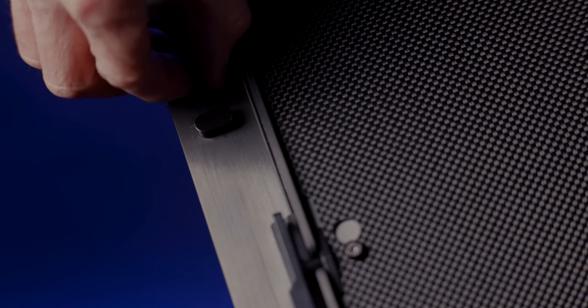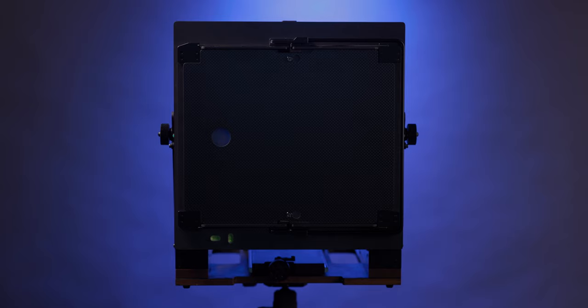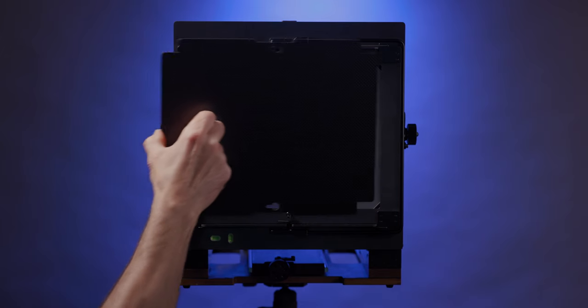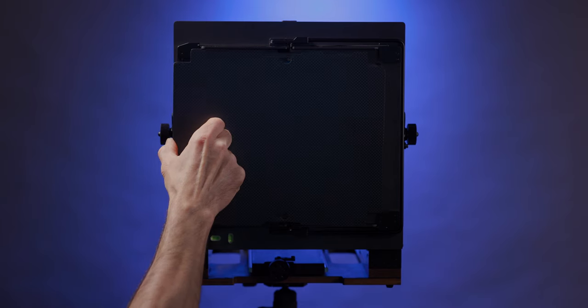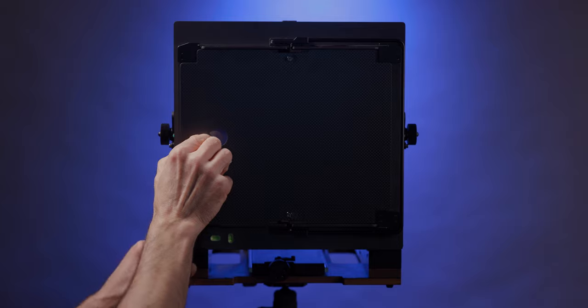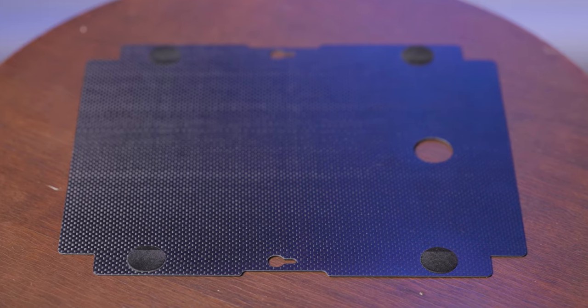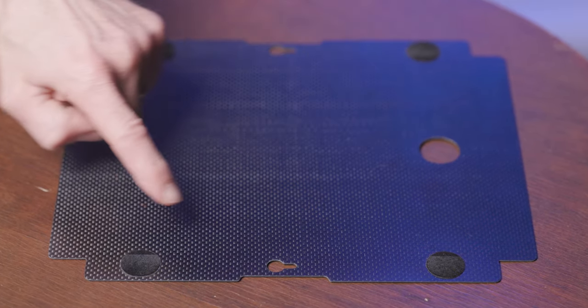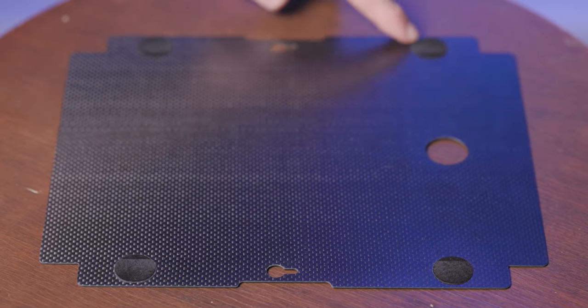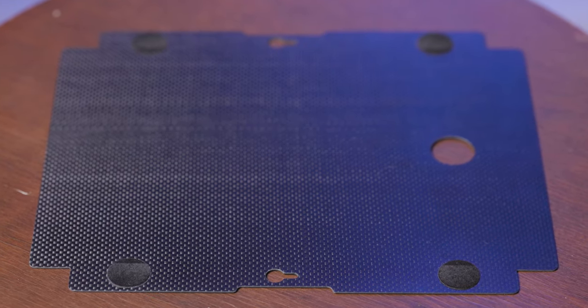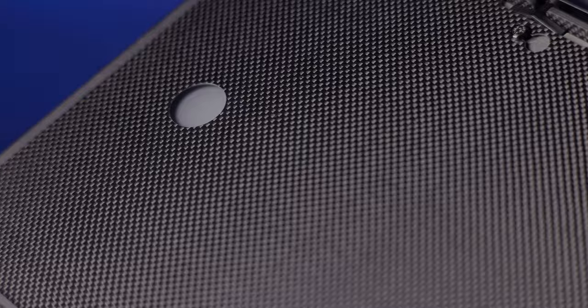There are also two bubble levels for adjusting the camera in the horizontal and vertical positions. Another nice feature is the included carbon fiber ground glass protector that uses keyhole slots to hold it in place and has four felt pads to minimize contact with the carbon fiber of the film back as well as the edge of the ground glass. I'm still on the fence about the finger hole that exposes the ground glass and whether that's a potential source of breakage.